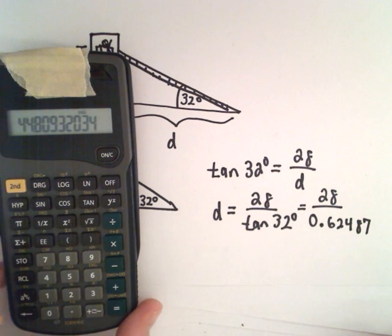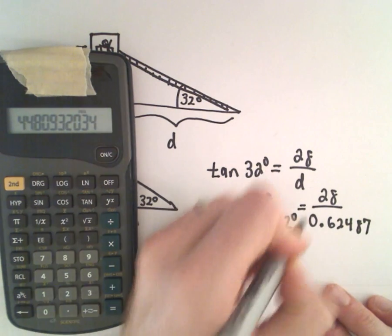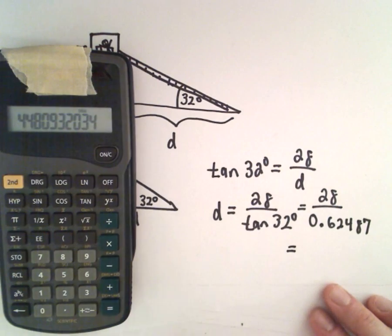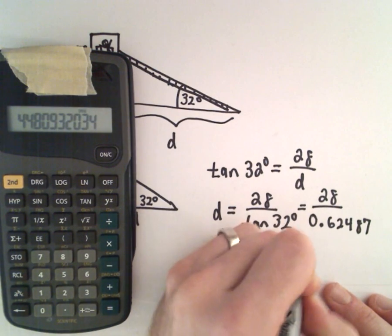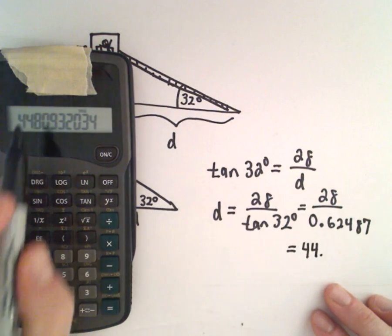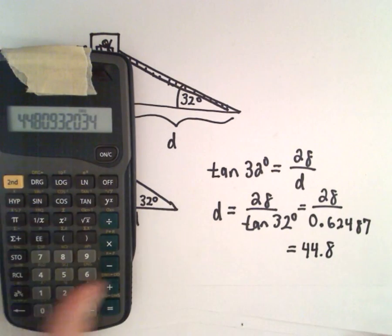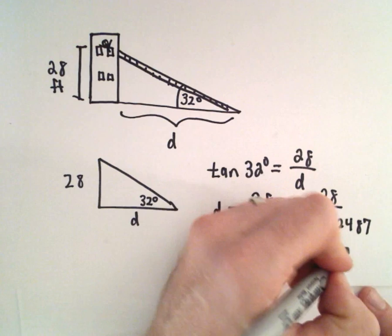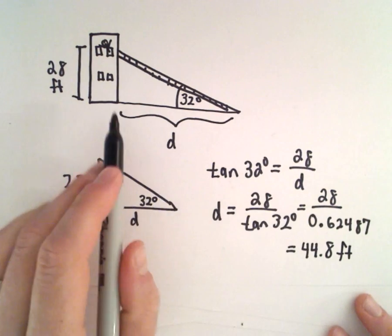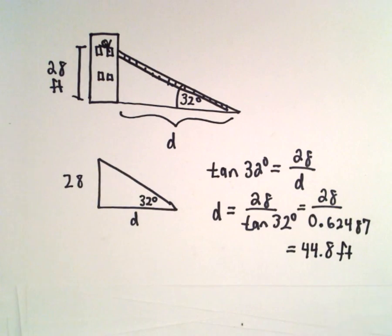and we're going to round this to the nearest tenth. I'm getting this to be 44.8, it looks like, since the zero follows. So 44.8 feet, that would be the distance from the base of the ladder to the building.